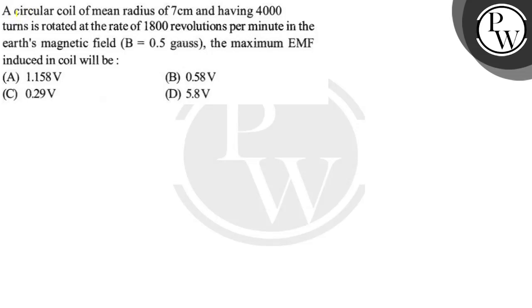Hello Bacho, let's read the question. A circular coil of mean radius 7 cm having 4000 turns is rotated at the rate of 1800 revolutions per minute in the earth's magnetic field, B equals 0.5 gauss.